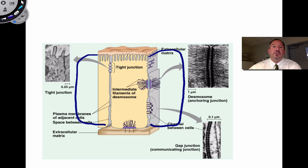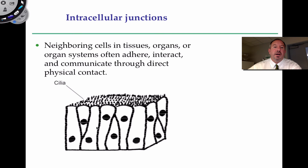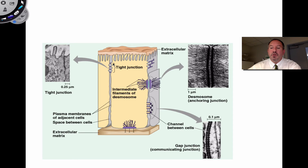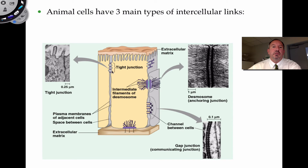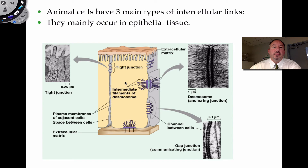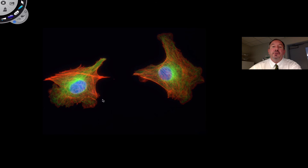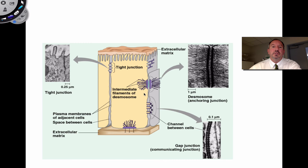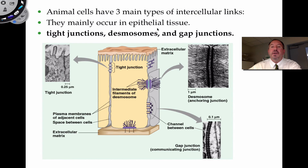These cells have tight junctions, desmosomes, and gap junctions, shown here in transmission electron micrographs — that's exactly what a tight junction looks like, that's a desmosome, and this is a gap junction. These junctions mainly occur in epithelial tissue because the cells are so close together. Connective tissue cells like fibroblasts are too far apart to have these cellular junctions, which is why tight junctions, desmosomes, and gap junctions are found specifically in epithelial tissue.